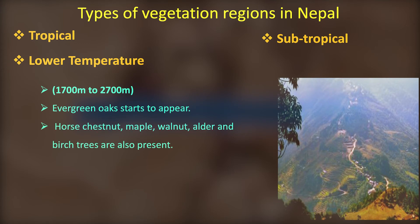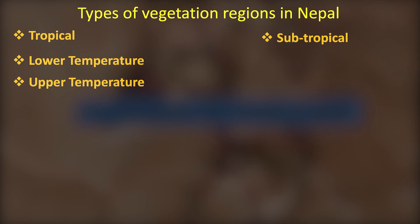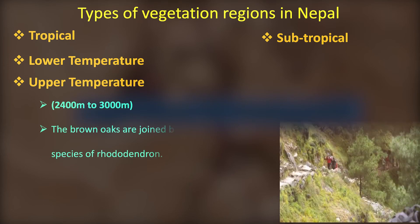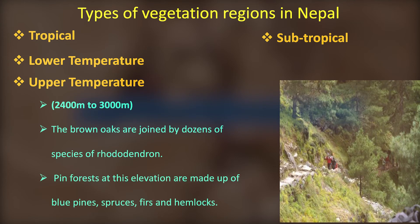Upper Temperature Pine vegetation is found from 2,400 metres to 3,000 metres. Trees in this zone include Brown Oak, Rhododendron, and different Pine forest species.